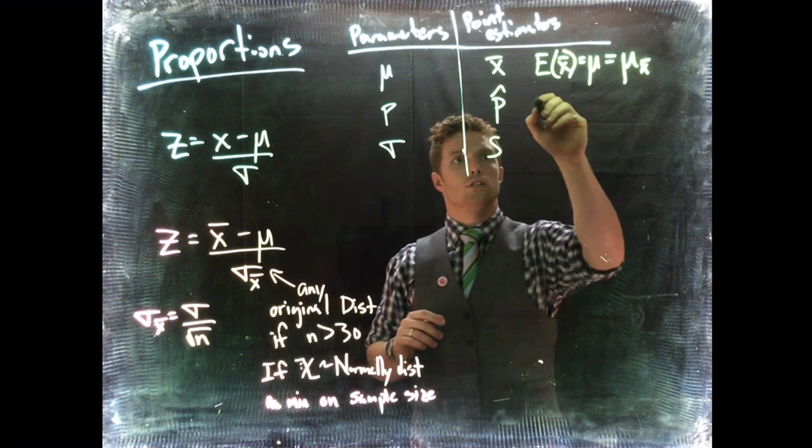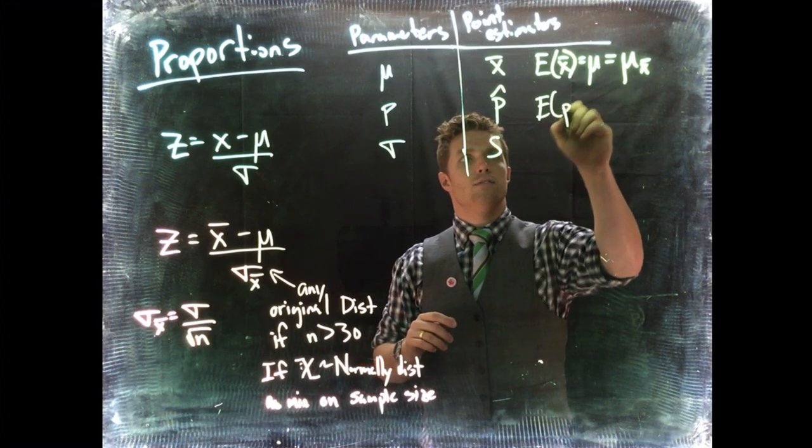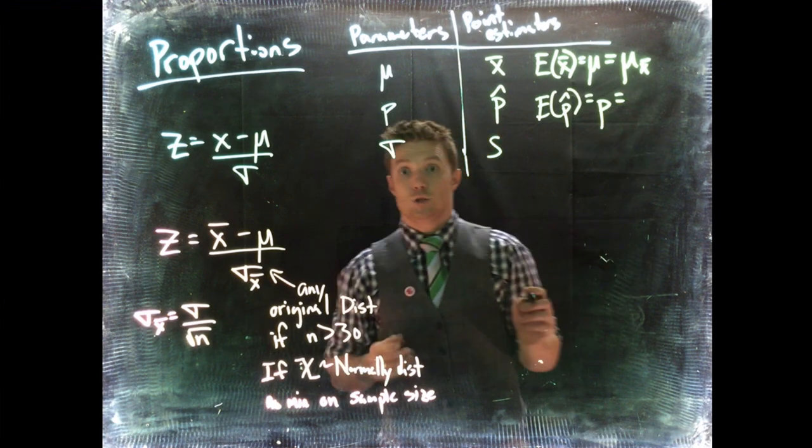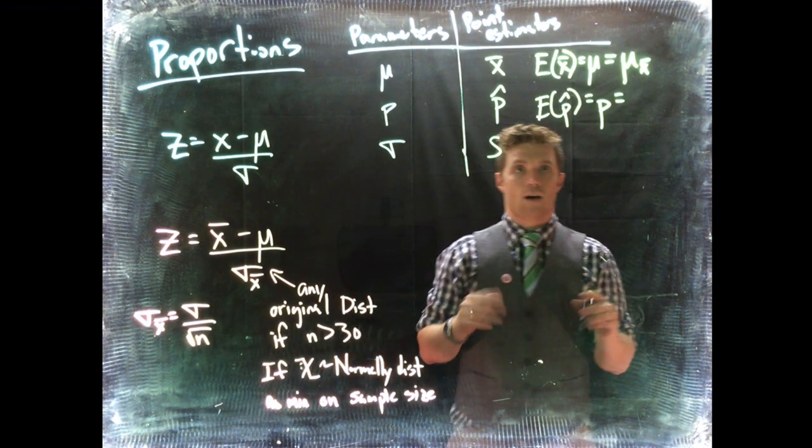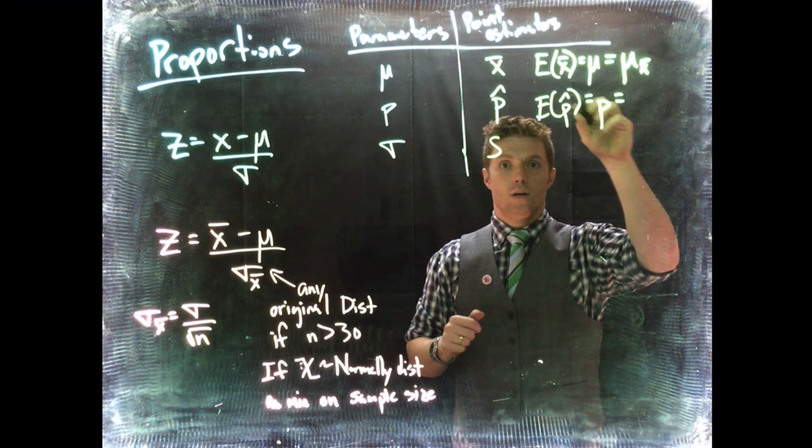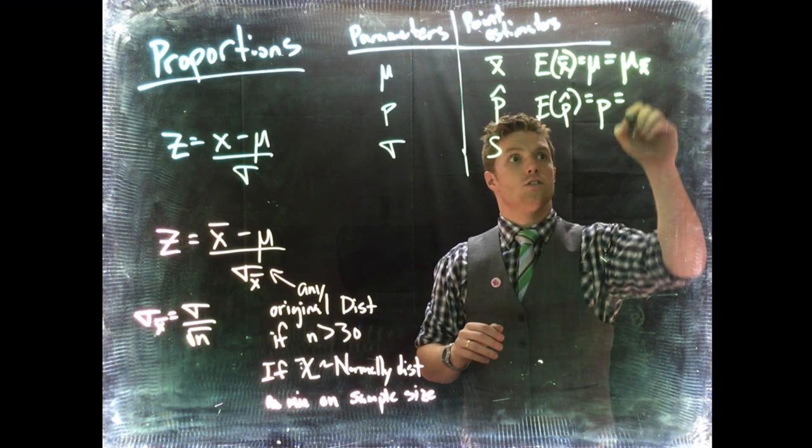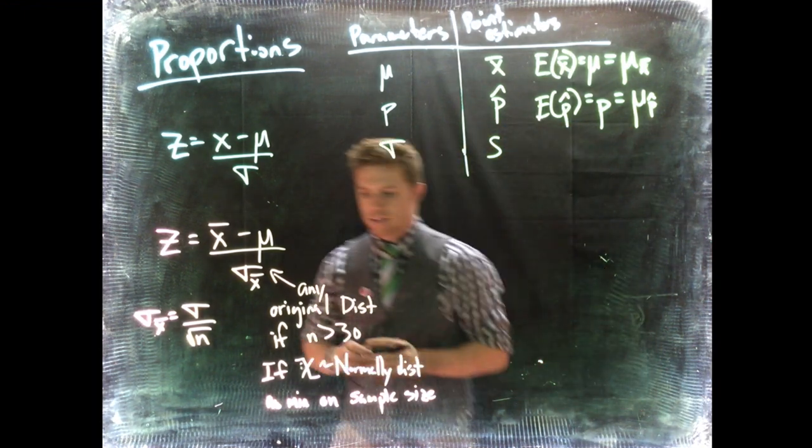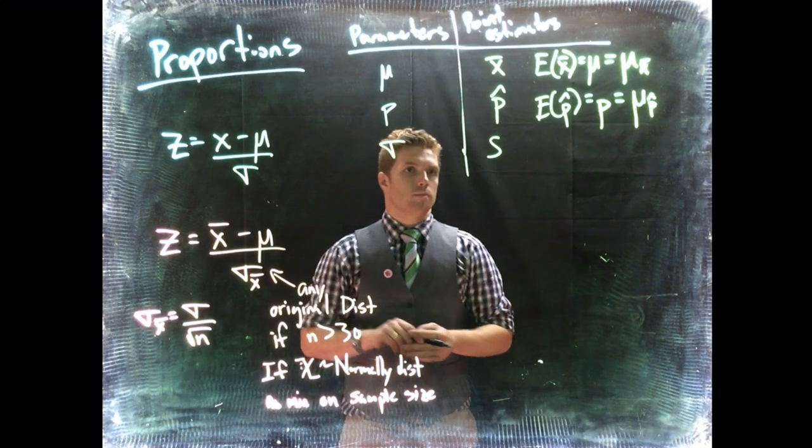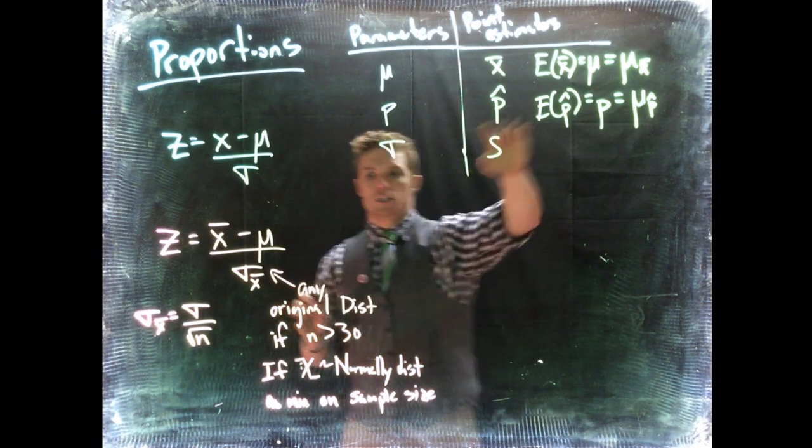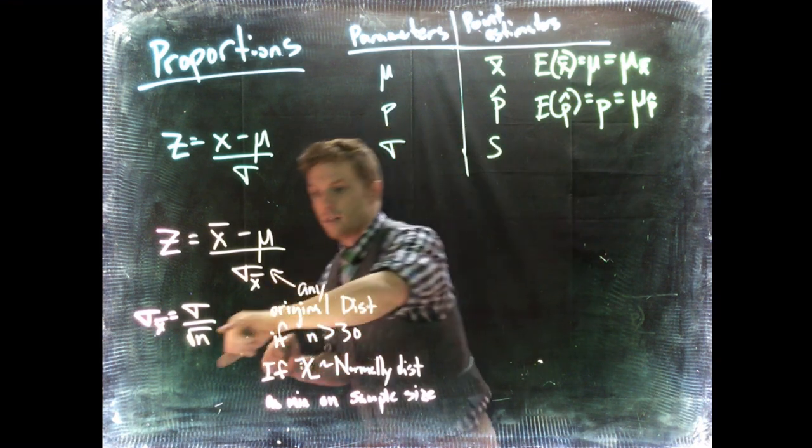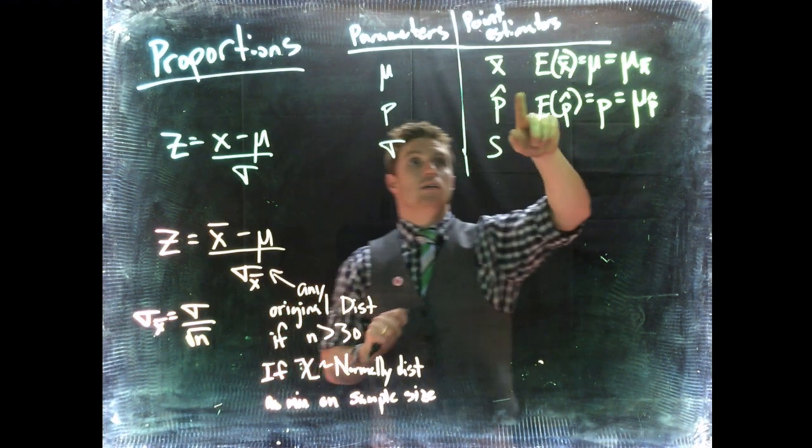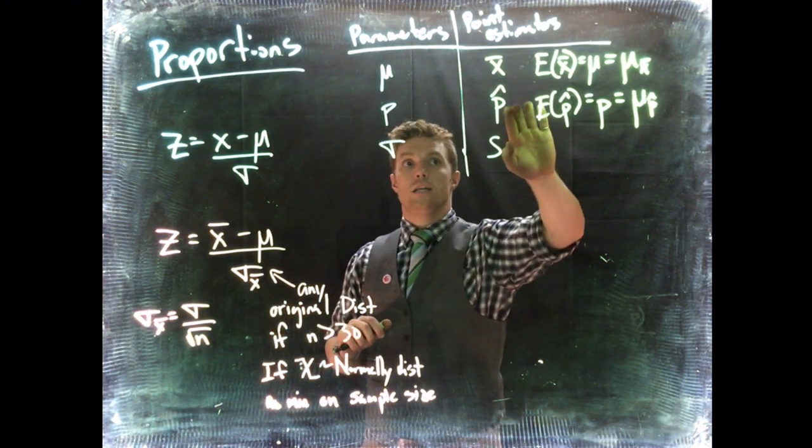The expected value of the sample proportion is the population proportion, which means the sample proportions average out to the population proportion. You'll see this written as mu of P-hat. Now we need to learn how to calculate the standard deviation with respect to P-hat.